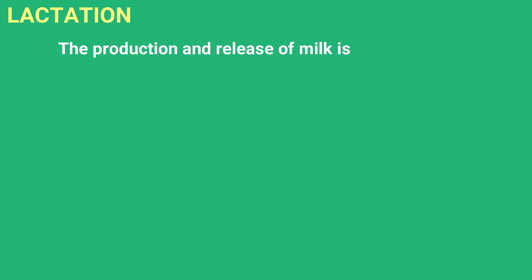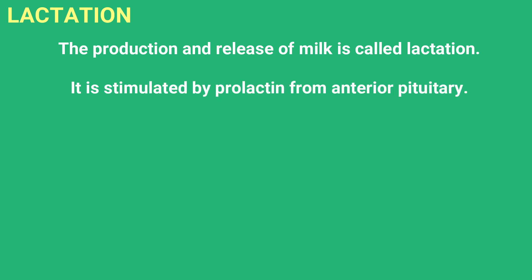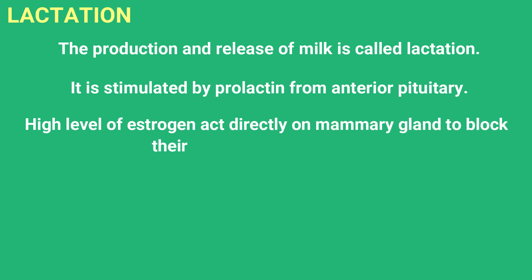The next heading is lactation. The production and release of milk is called lactation. It is stimulated by prolactin from the anterior pituitary. High levels of estrogen act directly on mammary glands to block their stimulation by prolactin — so if estrogen level is high, prolactin cannot act on the mammary gland and lactation decreases.